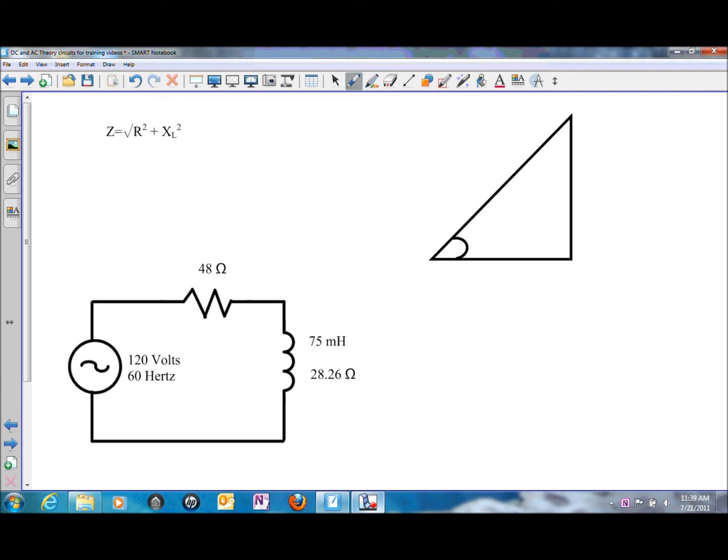In this case, it is a series RL circuit where we have one resistor and one inductor in series with a power source. Unlike DC circuits, the oppositions to current flow—in this case the 48 ohms of resistance and the 28.26 ohms of inductive reactance—cannot simply be added together.